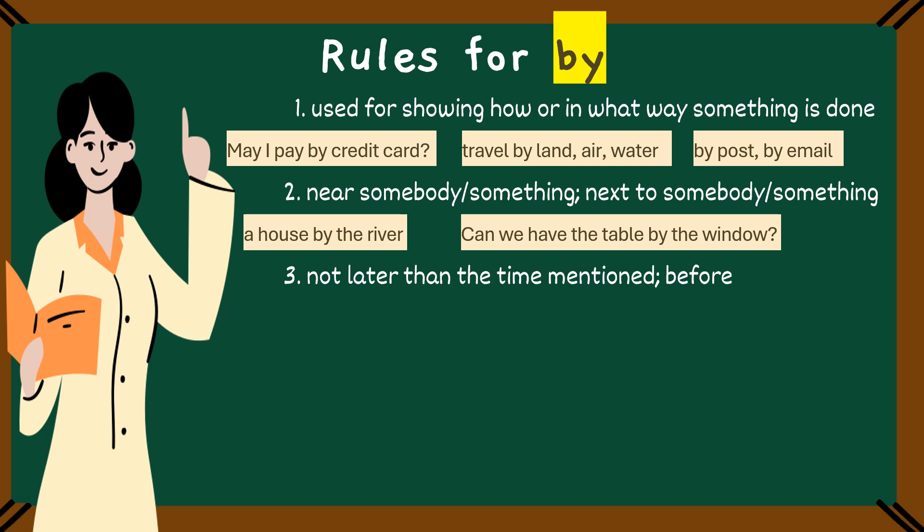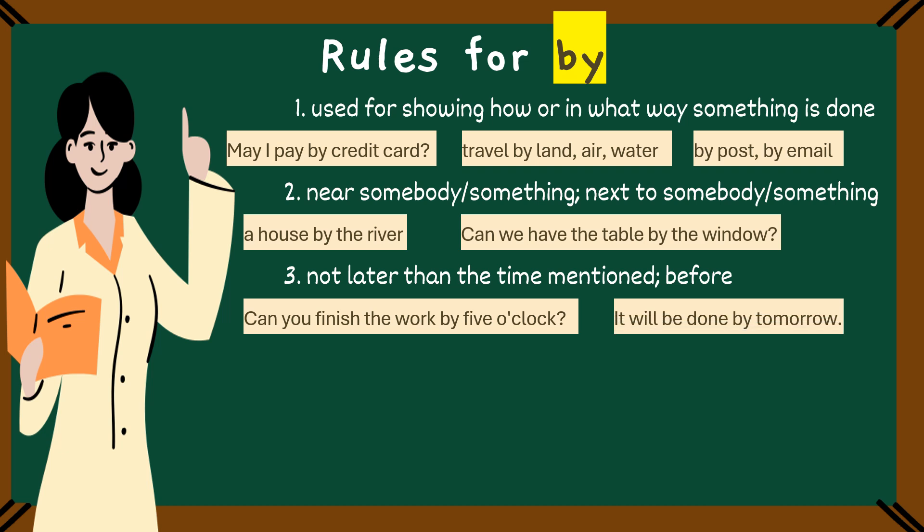Let's move to the next rule. Not later than a certain time, that means not after the deadline. Before deadline. It's all about deadlines children. By can mean no later than a specific time. For example, can you finish the work by 5 o'clock? Here, by shows the latest time for finishing your work. It will be done by tomorrow. This means that by the end of tomorrow, the task will be completed.